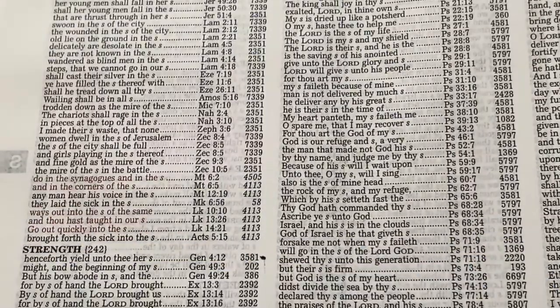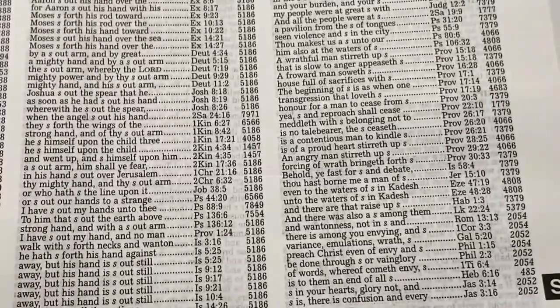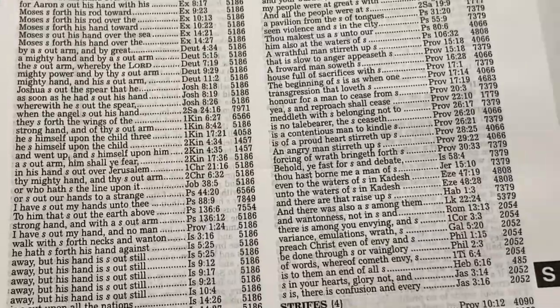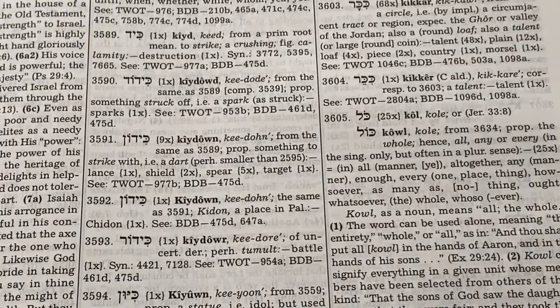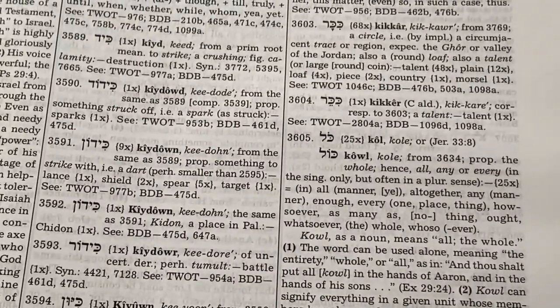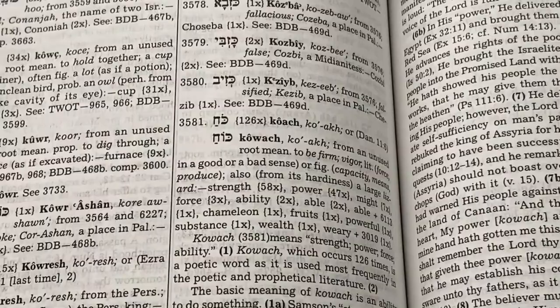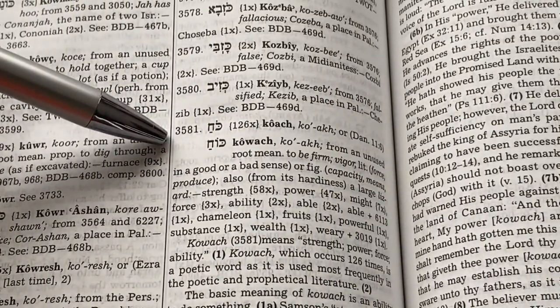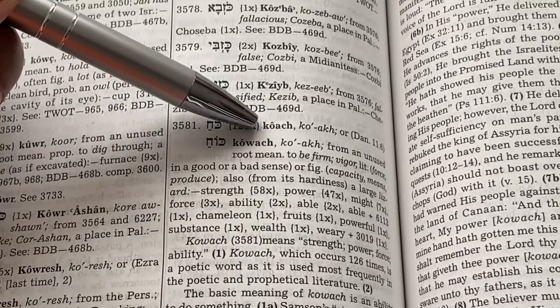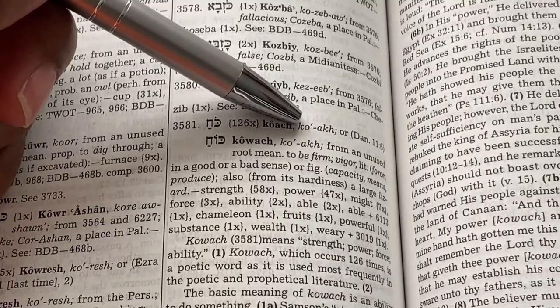And then you take that number. And then you go to the back of your concordance into the Hebrew section because Greek is the New Testament. You go into the Hebrew section and you look for 3581, which I've already marked. There we go. So you've got 3581. And then you've got the meaning in the Hebrew. And then you've got it written out in the Hebrew.